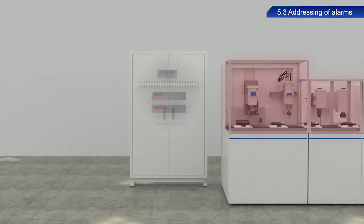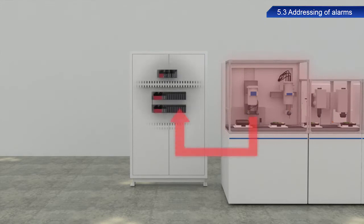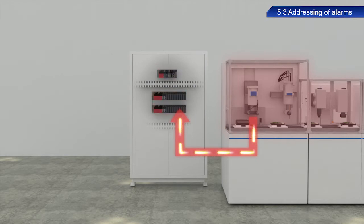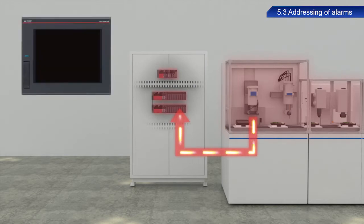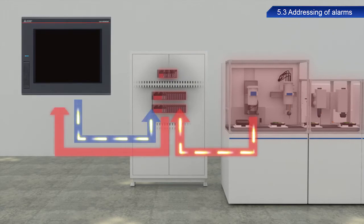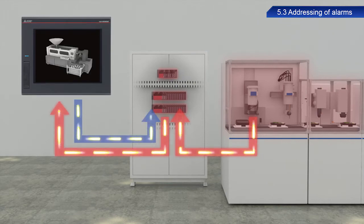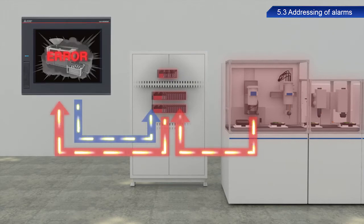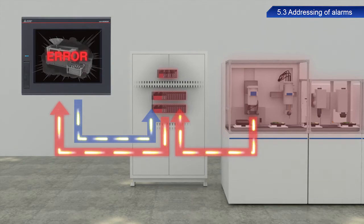PLCs and other devices detect system errors. However, normal PLCs are installed in cabinets and are not visible from a distance. GOTs can be linked with other devices so that alarm trigger events can be seen from outside the cabinets.